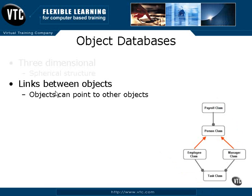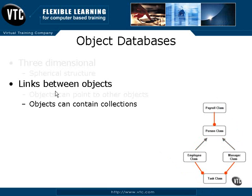An object data model allows distinct referential links between different objects within the object database, using either direct pointers or collection objects.